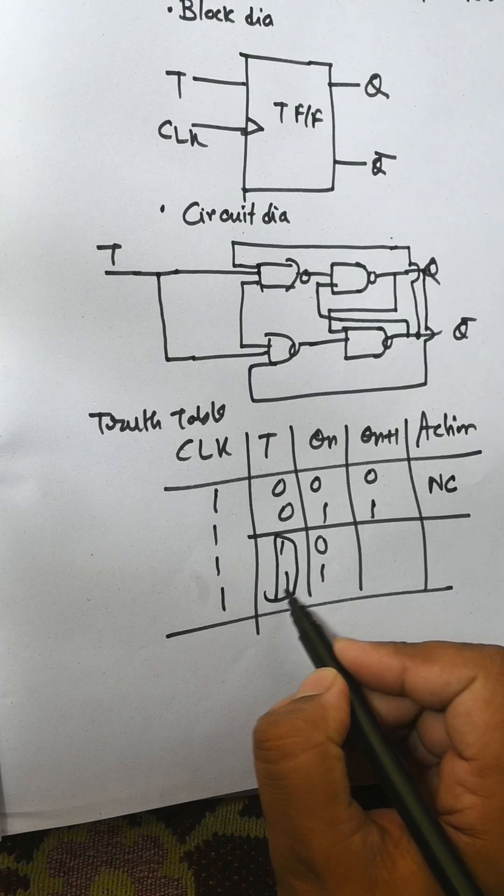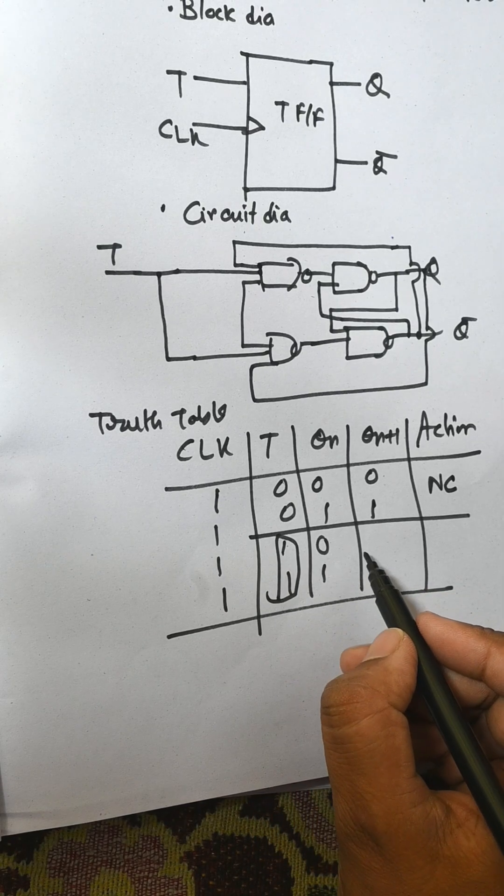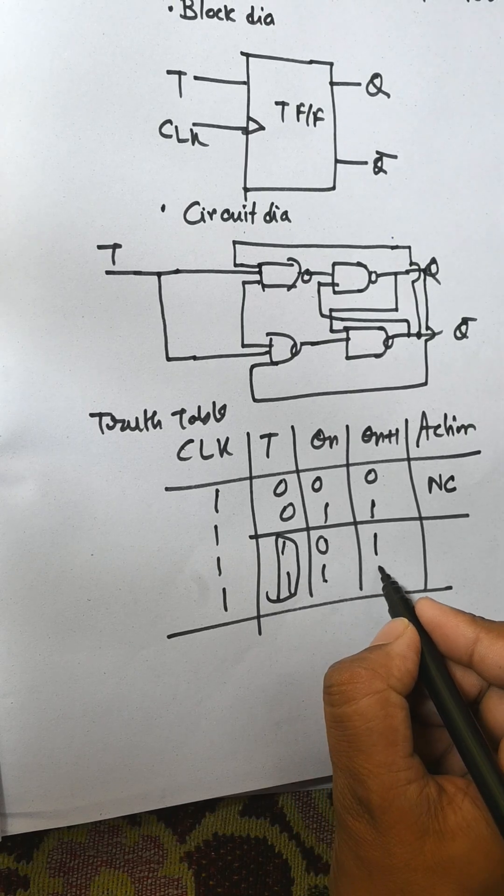T equals 1, the output becomes toggled. That means 0 goes to 1 and 1 goes to 0.